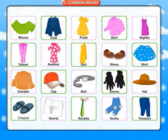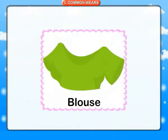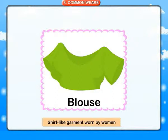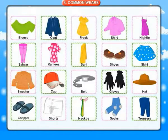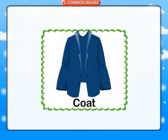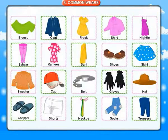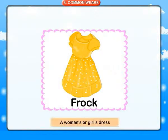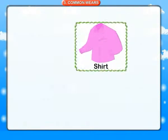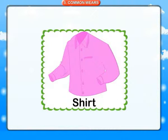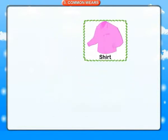Common wears. Blouse: a shirt-like garment worn by women. Coat: a long outer garment with sleeves worn to keep warm. Frock: a women's or girl's dress. Shirt: a garment with a collar.